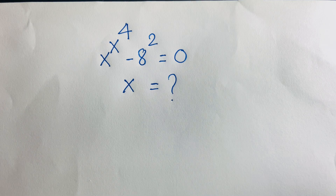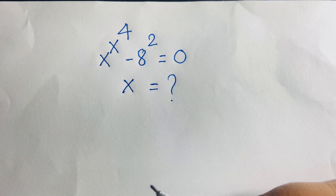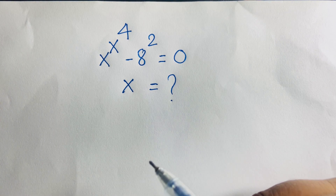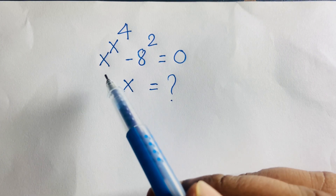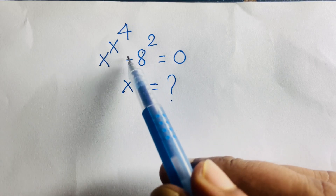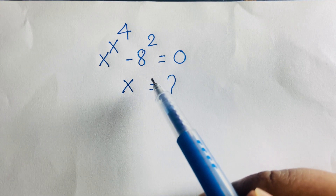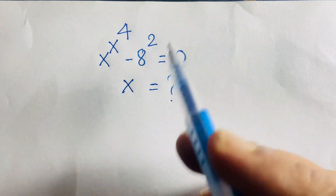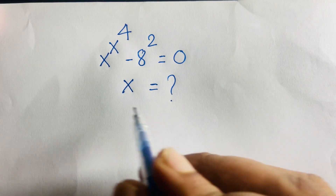Hello everyone. In this video, we have solved this math Olympiad equation. It is an exponential equation and it is an interesting math. Our question is x to the power x, power is 4, minus 8 squared is equal to 0. We will find out what is the value of x in this question.